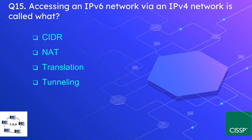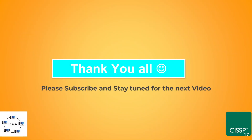Question number fifteen: accessing an IPv6 network via an IPv4 network is called what? The options are CIDR, NAT, translation, or tunneling. The correct answer is tunneling. That's all for today — thank you for watching. Domain 5 video will be uploaded very soon, so stay tuned. Thank you.